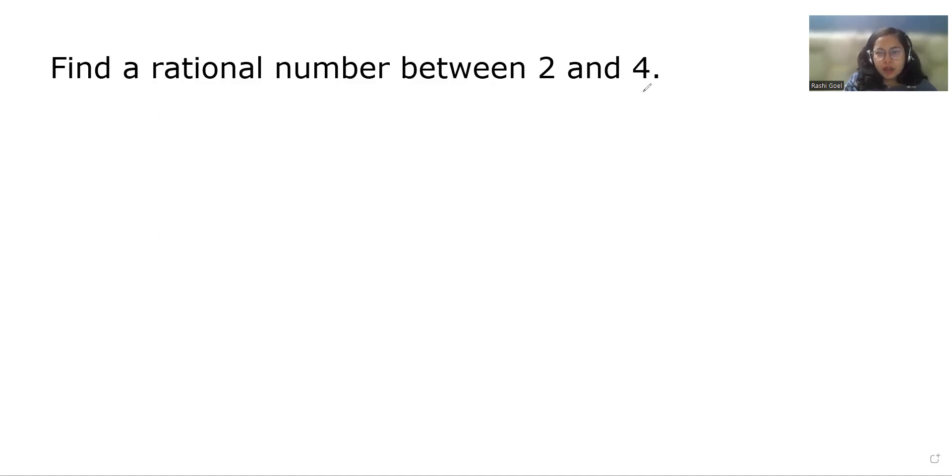If there are numbers given where there is no denominator, we are going to use a formula that is (a + b)/2. Here a is our first number, that is 2, and b is our second number, that is 4.